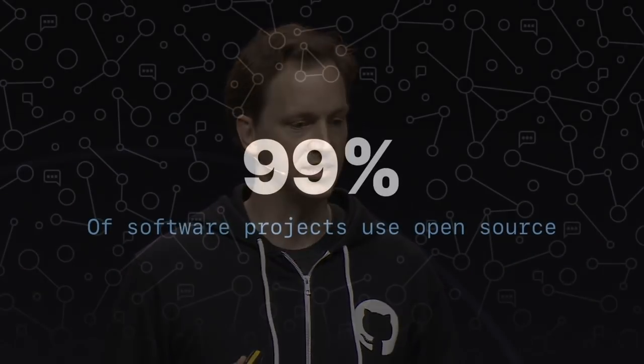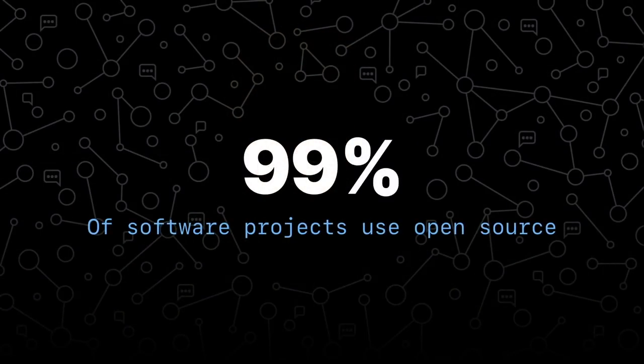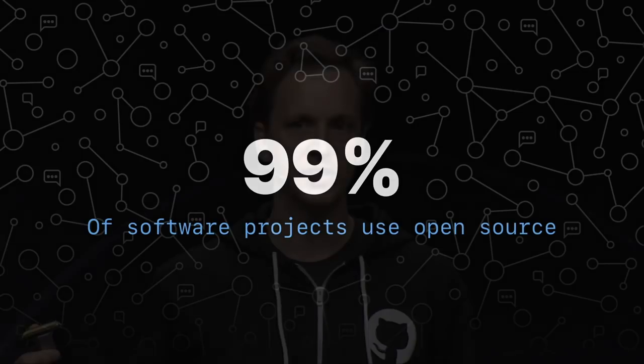More than 80% of the contributions that occur to open source come from outside the US. So in a way, if your company or your team is using open source code, you've already embraced remote work. Nearly every software project on Earth today has open source dependencies. Whether you're working at a large company or a startup, whether you're a scientist or a student, you rely every day on open source code and the people who create it.